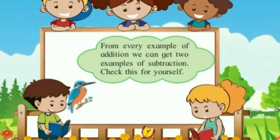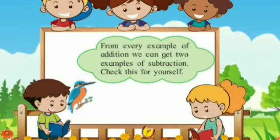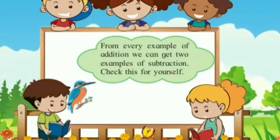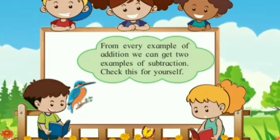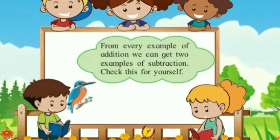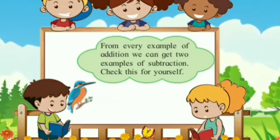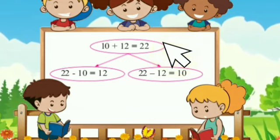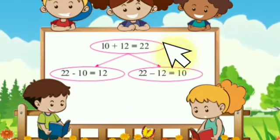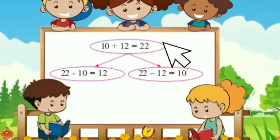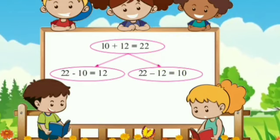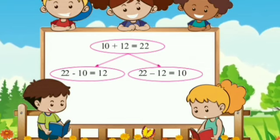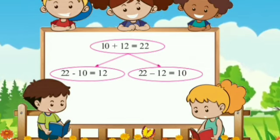From every example of addition we can get two examples of subtraction — check this for yourself. Here is the addition: 10 plus 12 is equal to 22. From this addition we get two subtractions: 22 minus 10 is equal to 12, and another — 22 minus 12 is equal to 10.